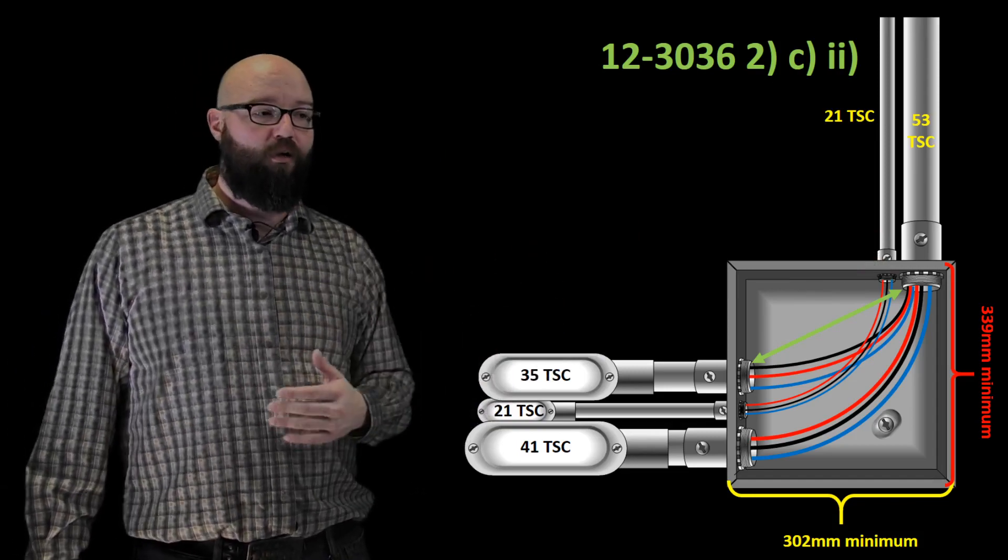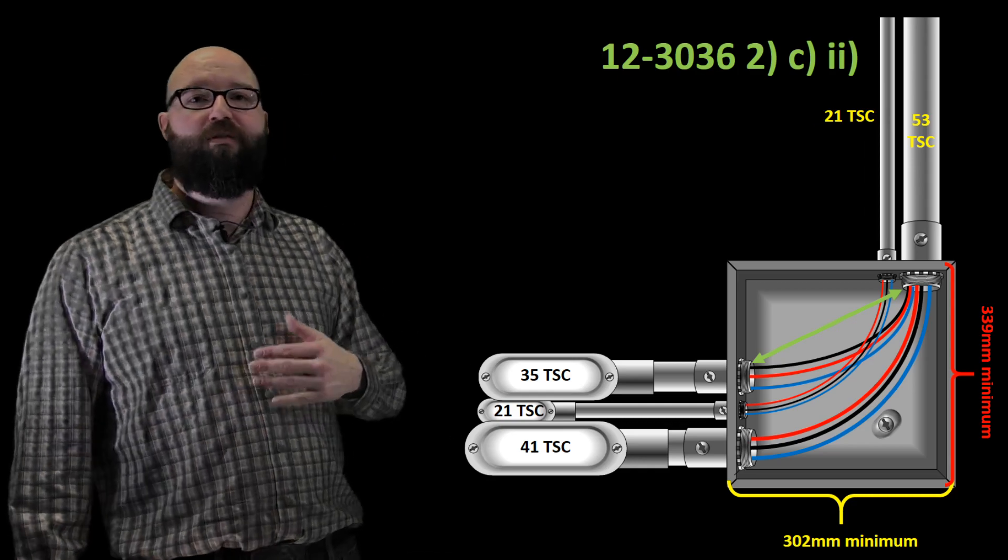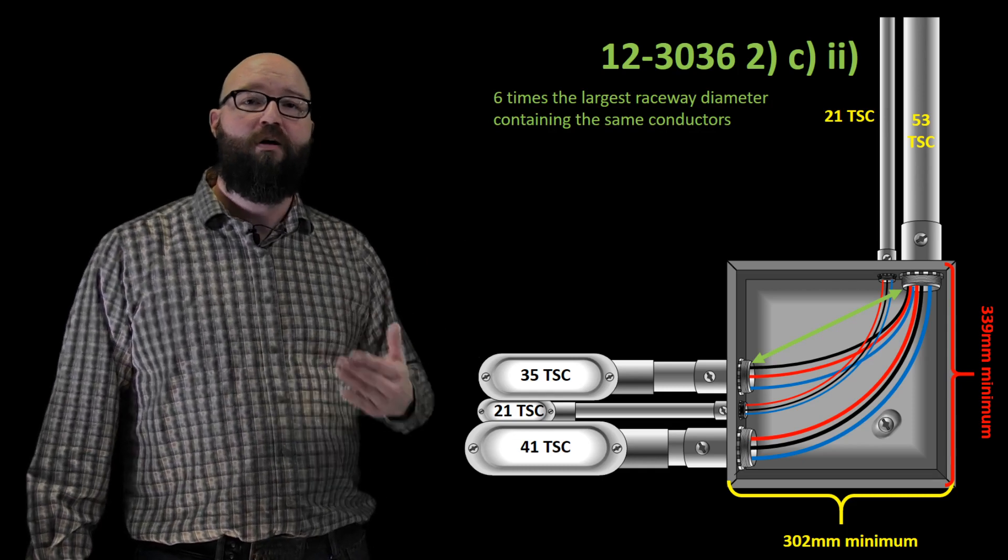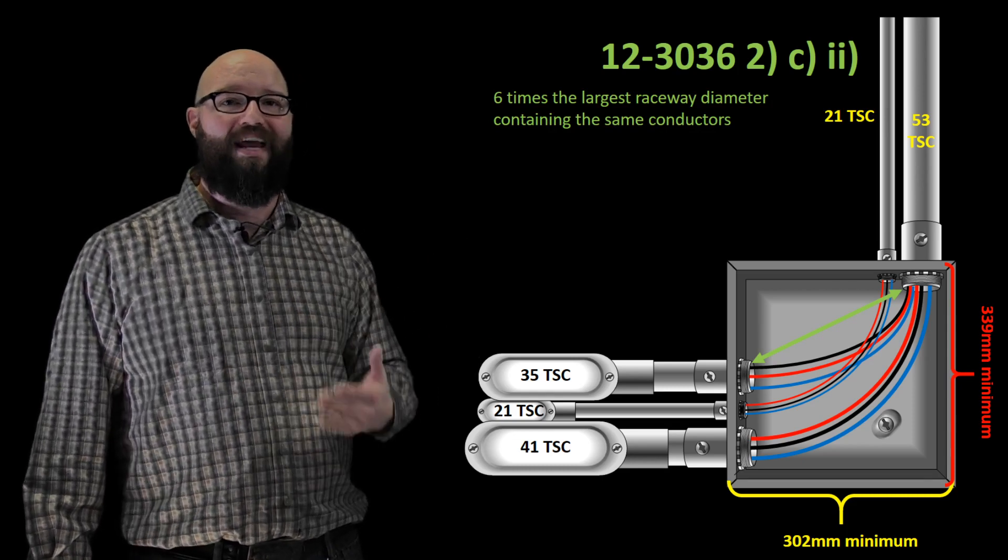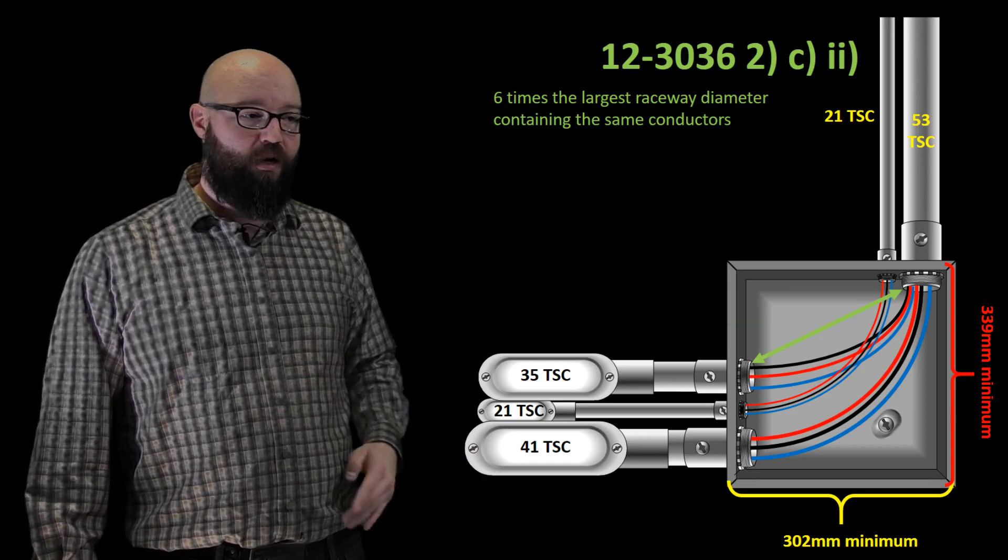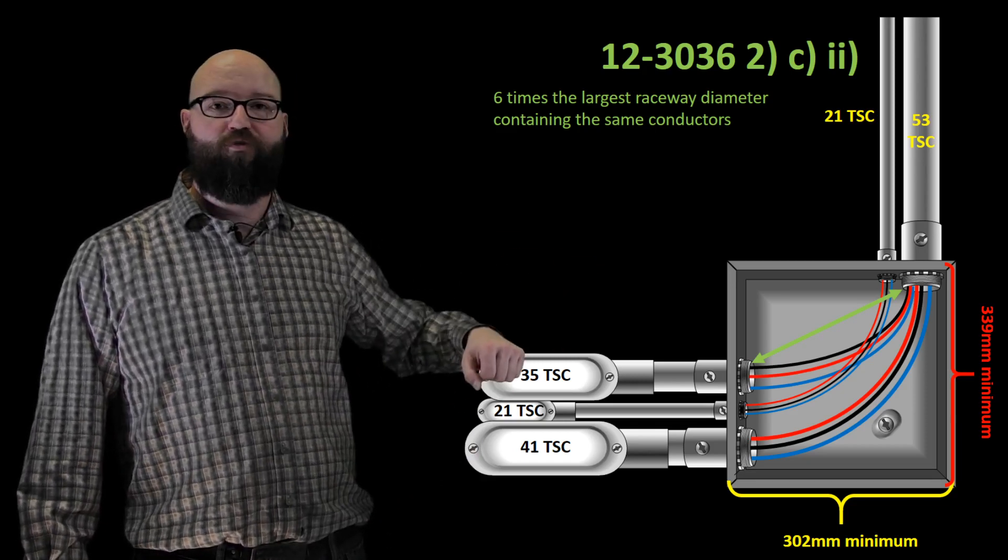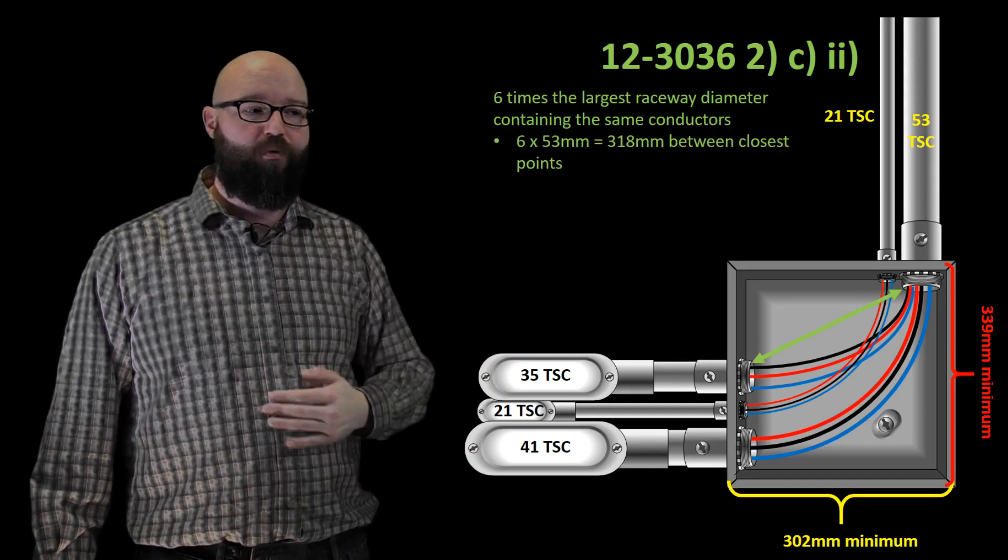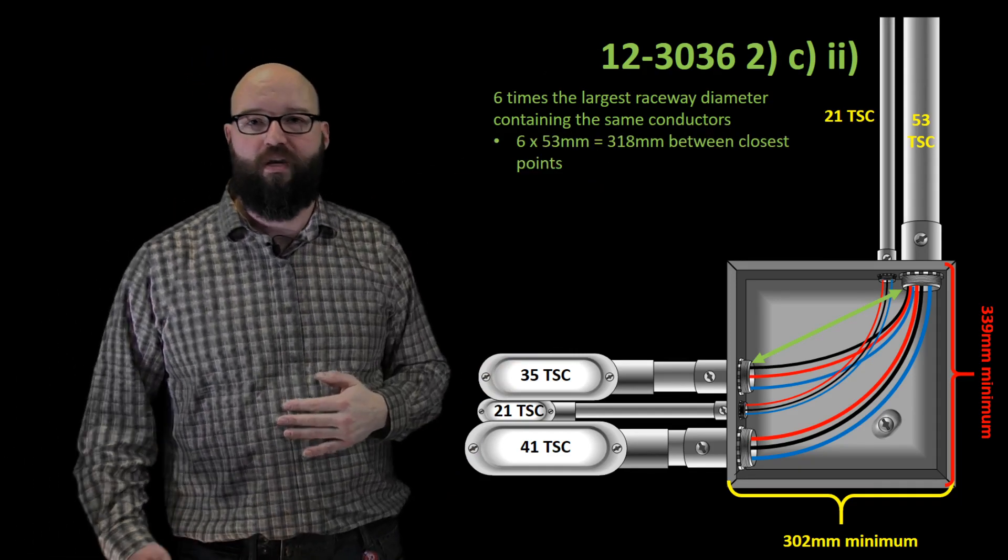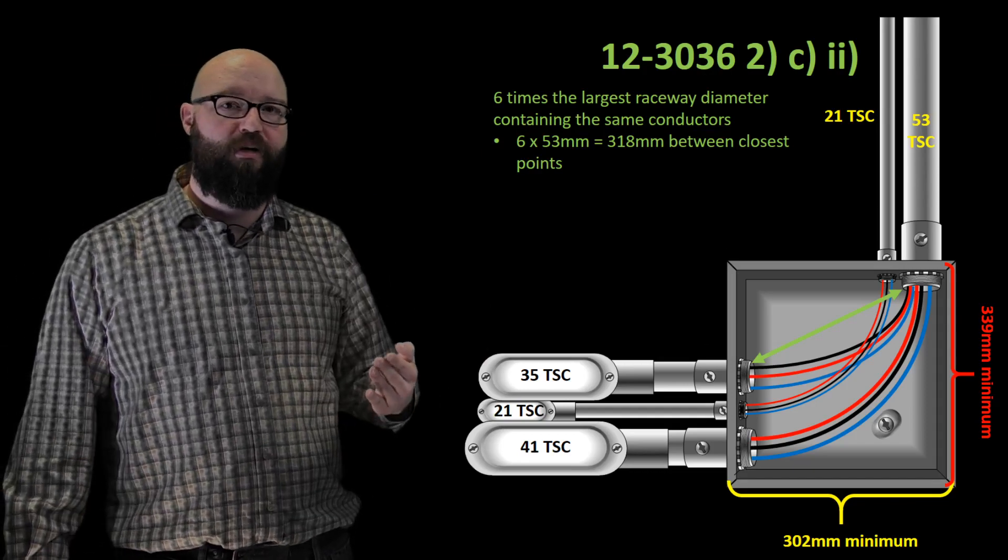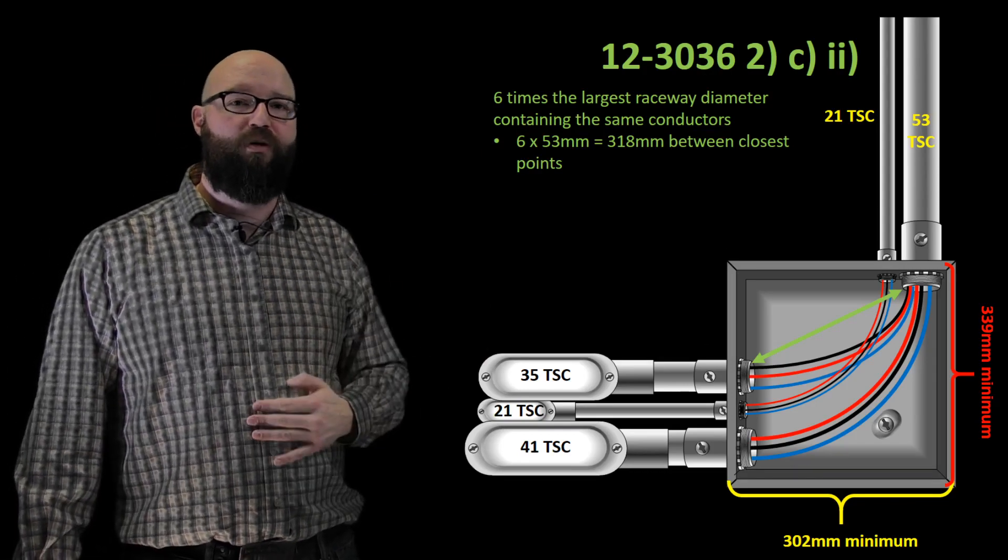If we take a look at 12-3036 sub rule 2 item C-II, it tells me all we're gonna do is take six times the trade size diameter of the largest raceway containing those conductors. So in this case, they are coming from our 35 trade size conduit and they go to our 53 trade size conduit. In this case, we would take the 53 trade size conduit as it's the larger, multiply it by six and we get that 318 millimeters. That's the minimum distance between those two conduits.